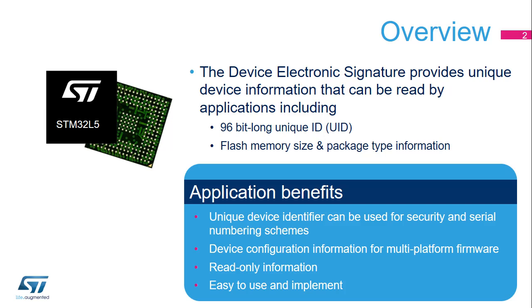The Device Electronic Signature provides a set of registers containing die identification, unique device identifier or UID, and other read-only device information, such as memory size, package type, and device calibration information.